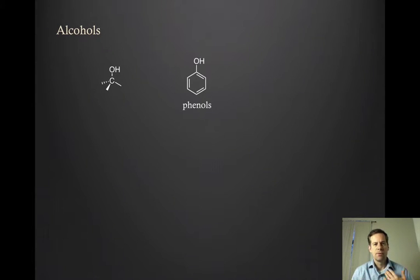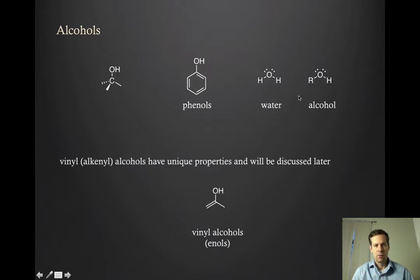And as a way to think about these, you might consider their analogy to water, which is H2O. And so an alcohol, structurally speaking, is water where you've replaced one of the hydrogens with an organic group, some carbon substituent. Now, the thing that we're not going to talk about in this unit are alkenyl alcohols or what you might call vinyl alcohols. These are known as enols, and these actually have very unique properties in chemistry that we're going to talk about in a further unit.